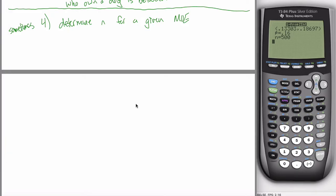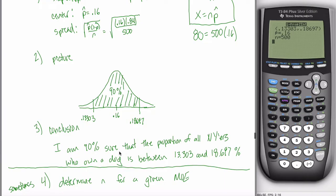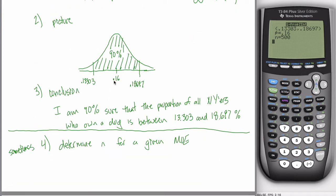Maybe you remember from the last time we talked about this, that the margin of error, which by the way is just the distance from the center to either of your endpoints here, all a confidence interval is, is your point estimate plus or minus your margin of error. In this case, the margin of error is 2.697% because 16% plus 2.697% gives me this 18.697%.